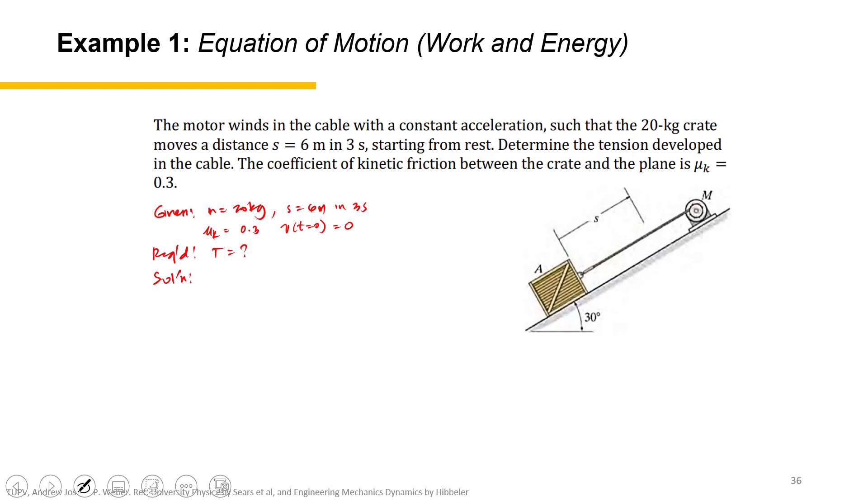On the space diagram, first we have the weight, its component on the Y-axis and the X-axis. Let's write the reference X and Y. Of course we have the normal force N and the tension T, and the last is the friction.